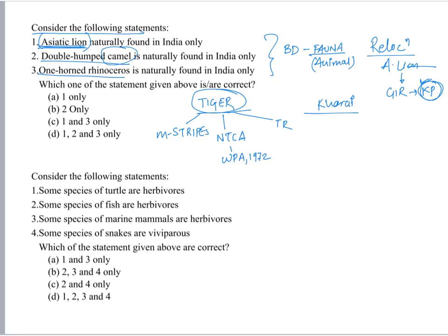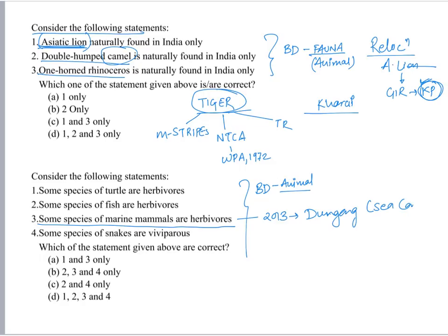The next question is about marine mammals — some species of marine mammals are herbivores. UPSC in 2013 asked about the Dugong, which we call a sea cow. If we know that in 2013 a question was asked to identify which of the following species are mammals, then we know that some mammals are herbivores in nature, especially aquatic ones like sea cows. So that statement was true — UPSC has given us guidelines through past year papers.